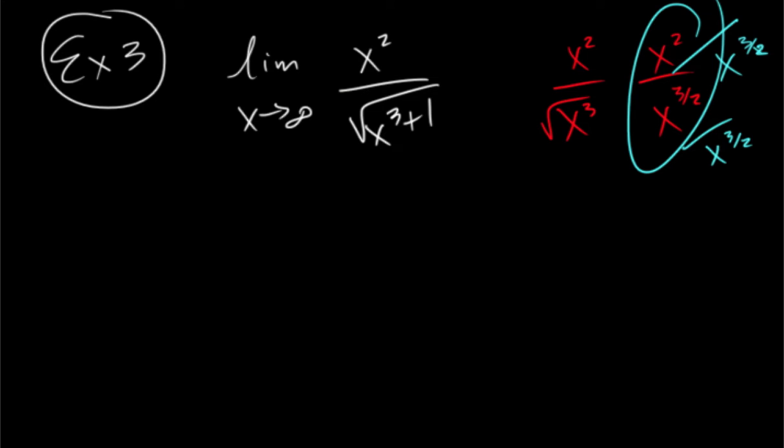So, to do that, we can divide this by x to the 3 halves, divide this by x to the 3 halves. And what's going to happen on top is pretty straightforward. We'll think of this as 4 halves. 4 minus 3 is going to give us 1 half. So we get x to the 1 half on top.